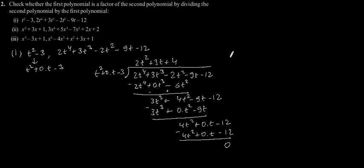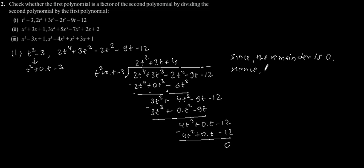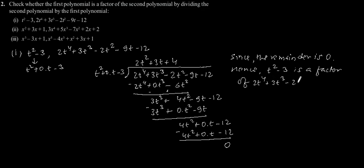Since the remainder is 0, hence t squared minus 3 is a factor of 2t to the power 4 plus 3t cubed minus 2t squared minus 9t minus 12.